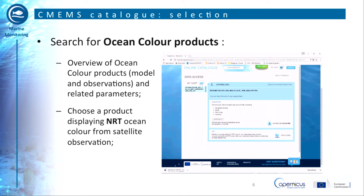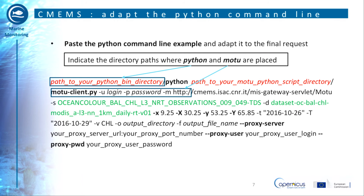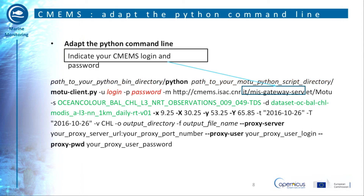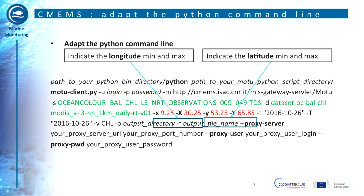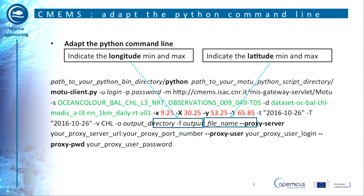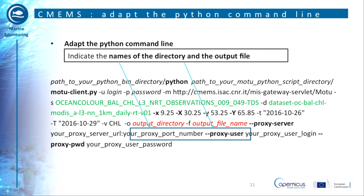To execute this command line, copy and paste it into your editor window and proceed to modifications. The first necessary changes are the update of the directory path for your Python and Motu. Then, indicate your CMEMS login and password in the command line. The name of the product as well as the name of the selected dataset are indicated in green. According to your needs, you can modify the geographical extent of the download by changing the longitude and latitude. You can also modify the start date and end date of the extraction following the shown format. Finally, give the name of the output file and the directory where the extraction will be written.